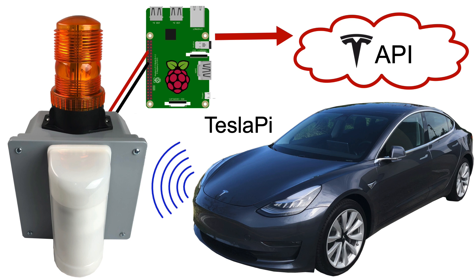Tesla Pi is a security alarm project that integrates an outdoor motion sensor with the headlights and horn of a Tesla car. The project uses a Raspberry Pi to communicate with the Tesla API.